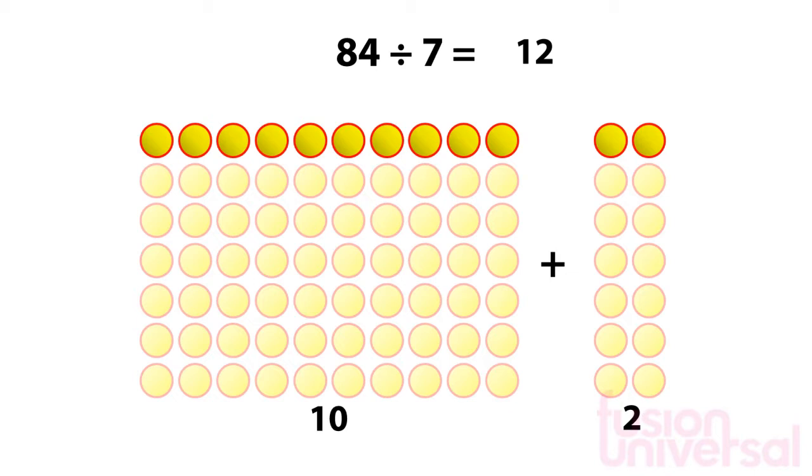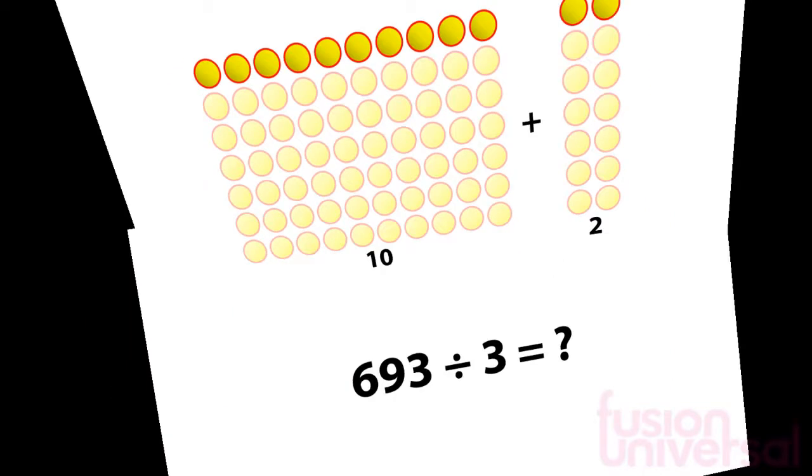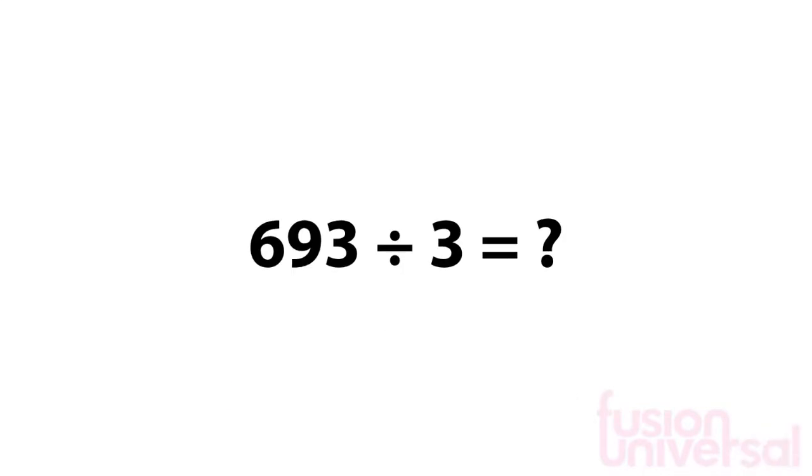It's not always possible to draw out a grid fully. Sometimes the number you are dividing into is just too big. If we want to divide 693 by 3, we need a different way of doing it.